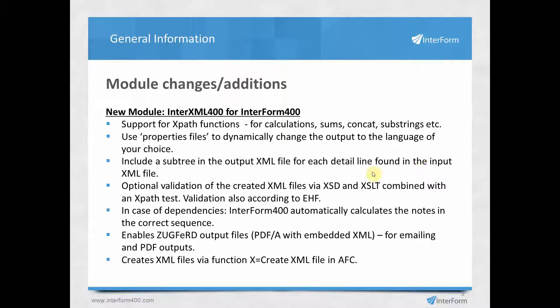You can also run the output through an XSLT transform to create a new XML file and validate it with an XPath test. There is also special validation for EHF XML files included in the product. When generating the output XML file, the calculations can have cross-references — a field in one node can refer to contents of other nodes — and Interform will automatically handle these dependencies, calculating nodes in the correct order.